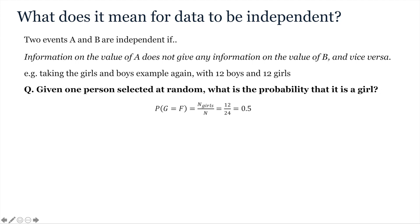Two events A and B are independent if information on the value of A does not give any information on the value of B and vice versa.